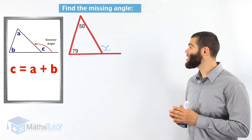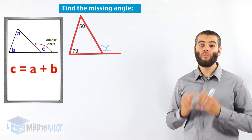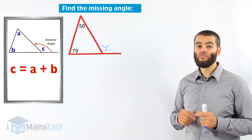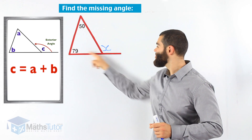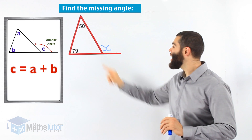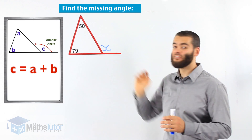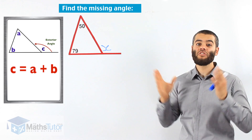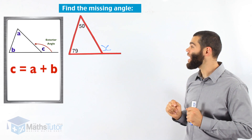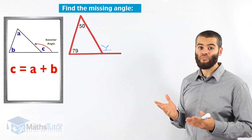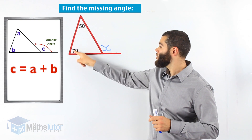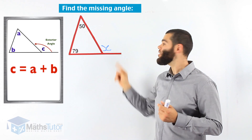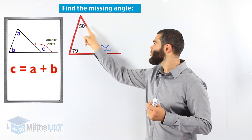We have a question here — find the missing angle. We can straight away look at this diagram and identify that we have a triangle and we have an exterior angle. As soon as you see that, straight away think: exterior angle of a triangle. The concept says the two opposite interior angles are opposite the exterior angle.